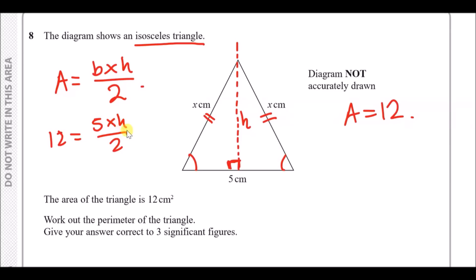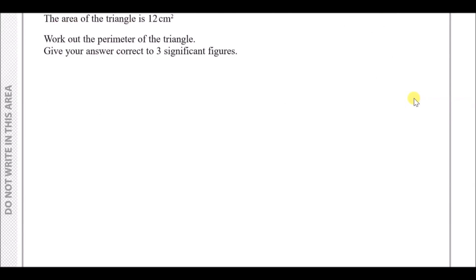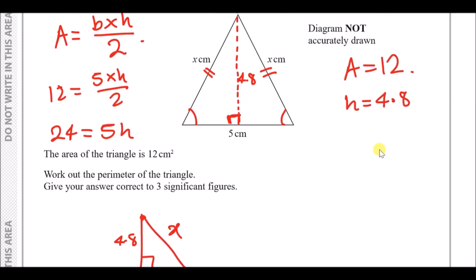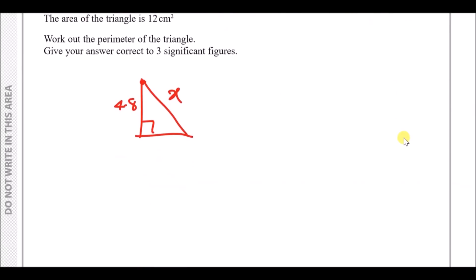Rearranging to find h: multiply both sides by 2 to get 24 = 5h, then divide by 5, giving h = 4.8. Now label the height as 4.8 on the triangle. To find x, use Pythagoras on the right-angle triangle: one leg is 4.8, the other is half the base = 2.5.